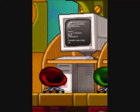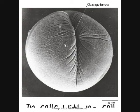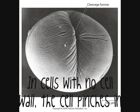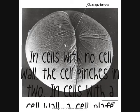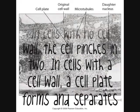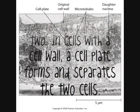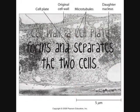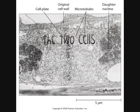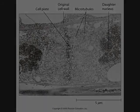Cytokinesis. In cells with no cell wall, the cell pinches in two. In cells with a cell wall, a cell plate forms and separates the two cells.